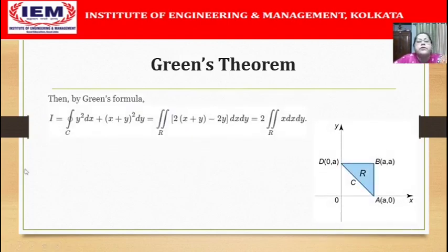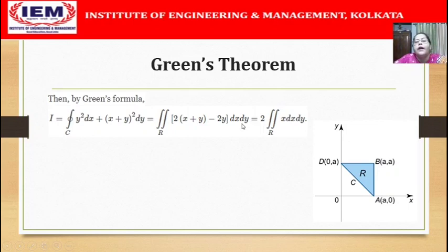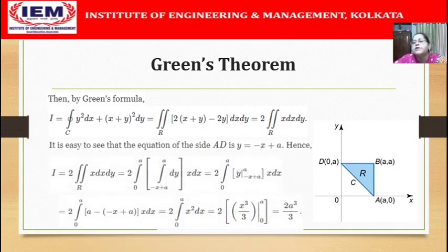Let us evaluate the line integral by converting it to a double integral. This becomes the double integral of (∂Q/∂x minus ∂P/∂y) dx dy, which is the double integral of (2(x plus y) minus 2y) dx dy, ultimately simplifying to 2 times the double integral of x dx dy over the region R.